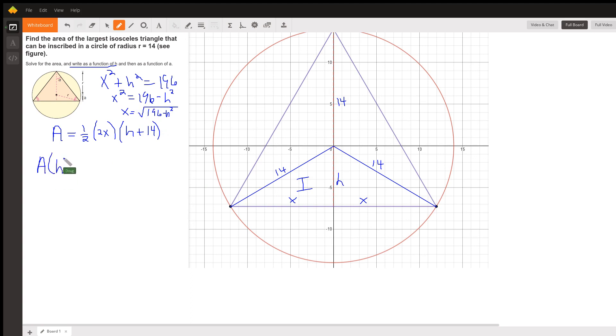And so, as a function, we're saying the area of the isosceles triangle depends on H. These twos cancel out. X is the square root of 196 minus H squared, which I can write this way, times this H plus 14. So, there is your function for the area of that isosceles.